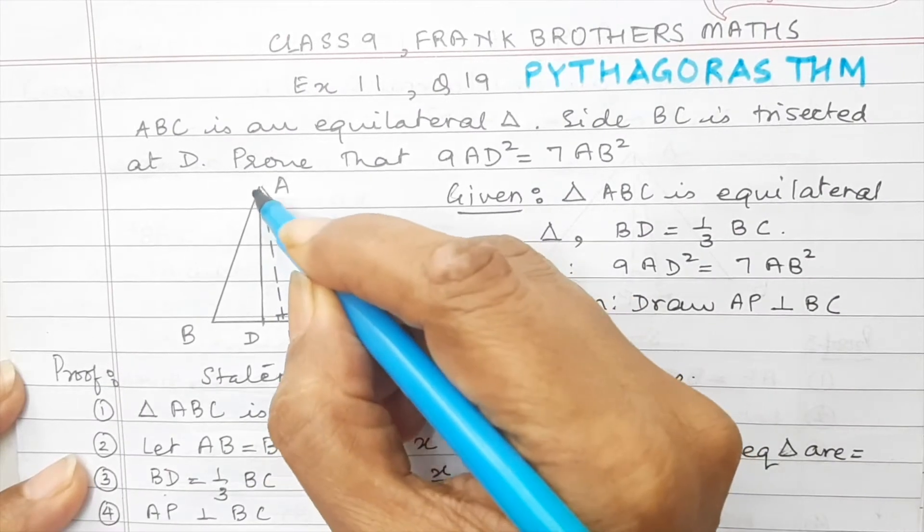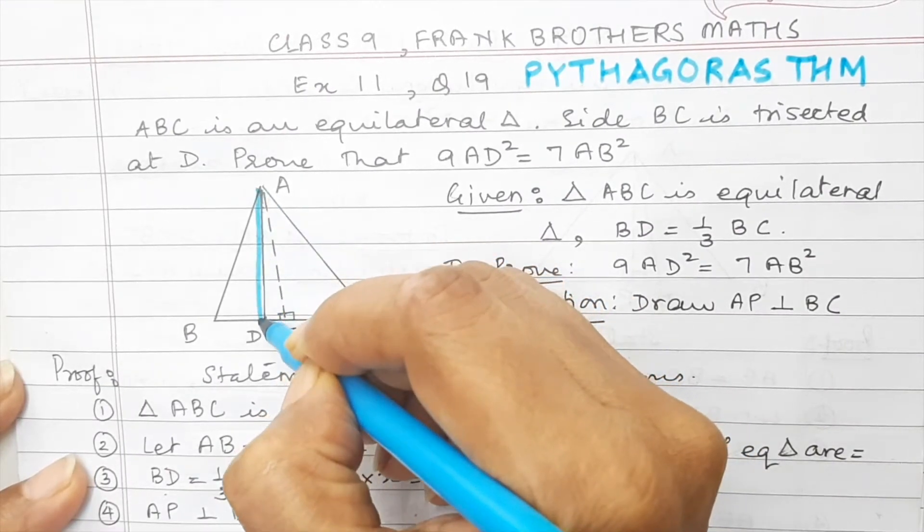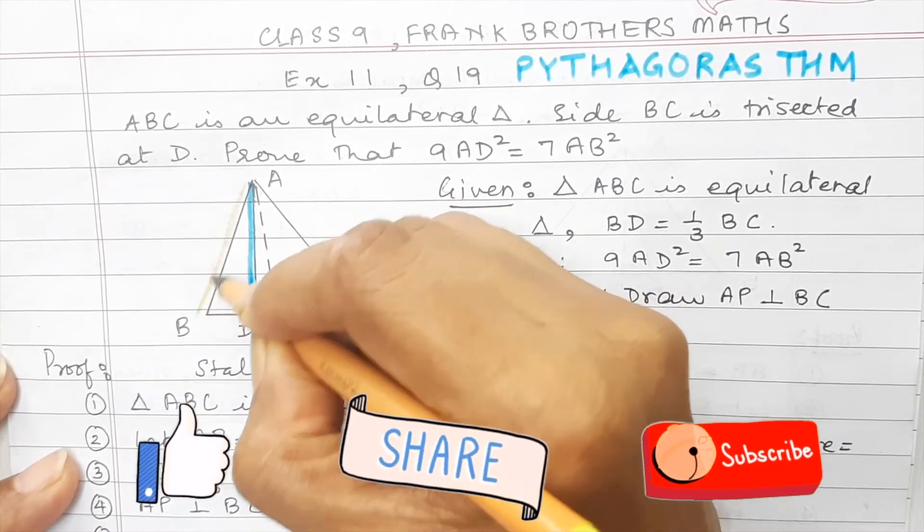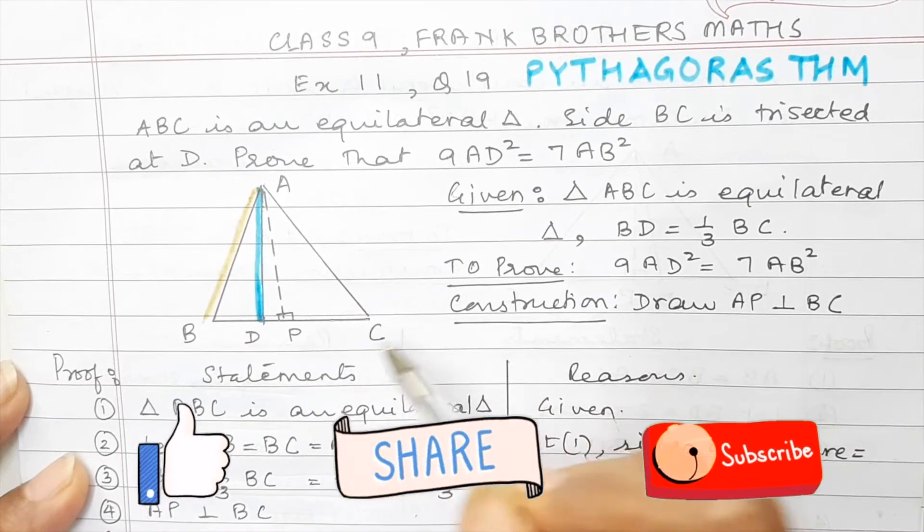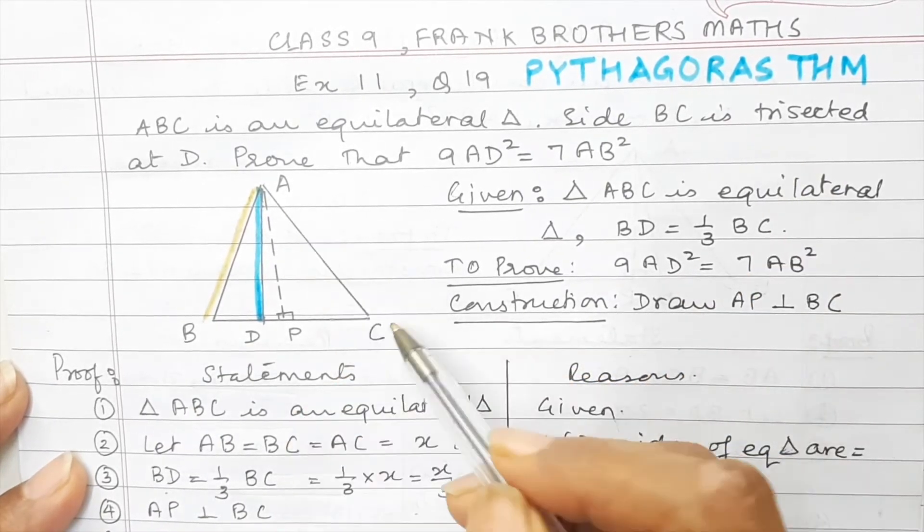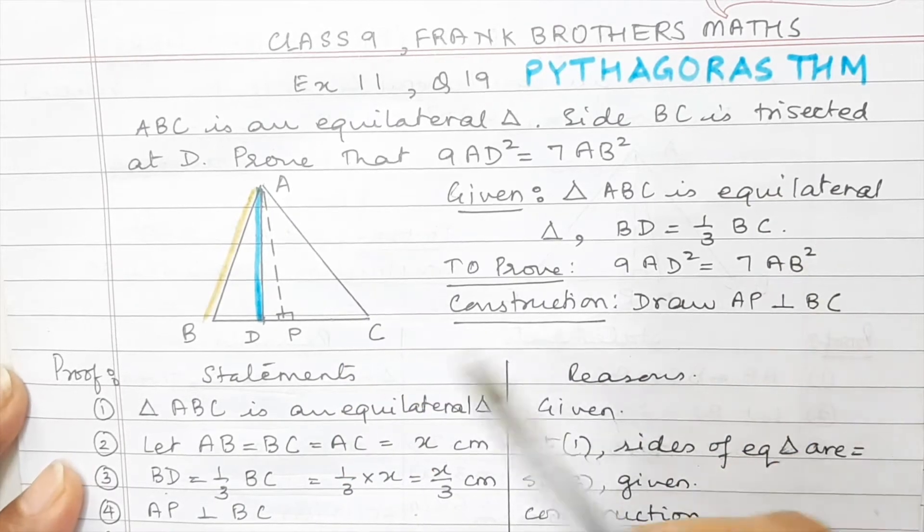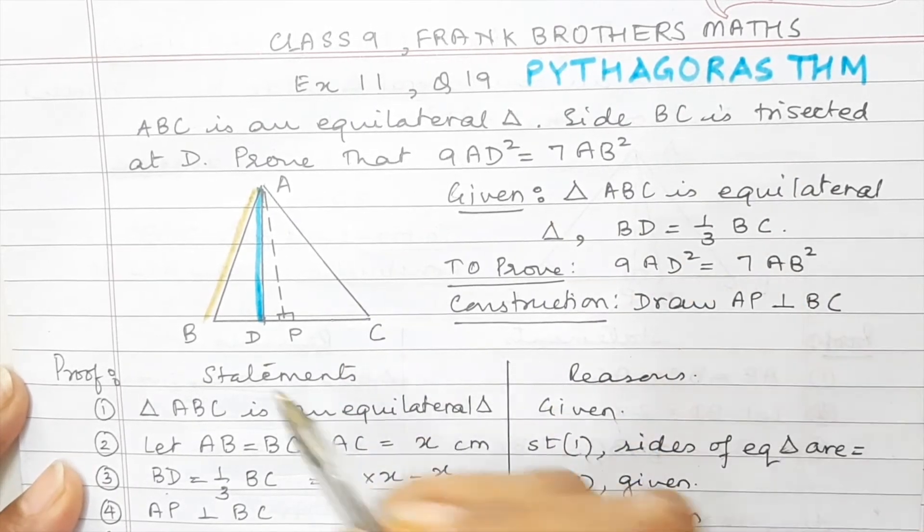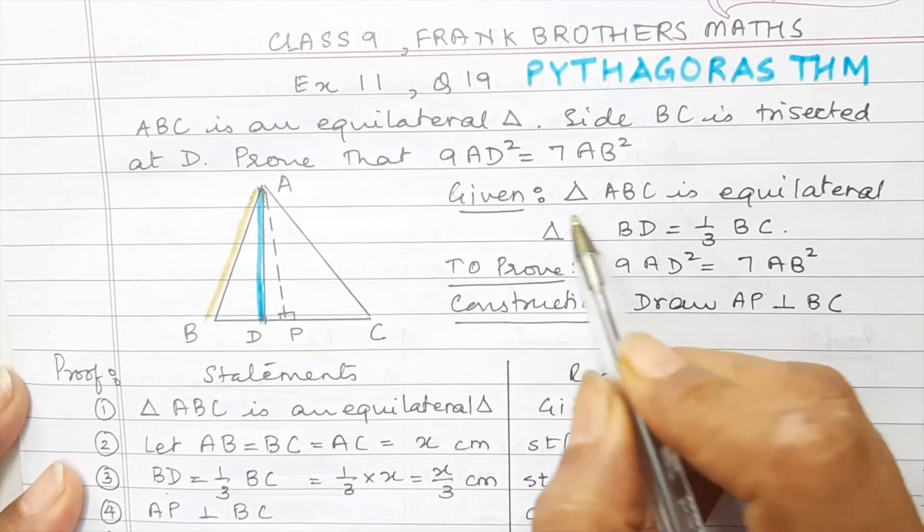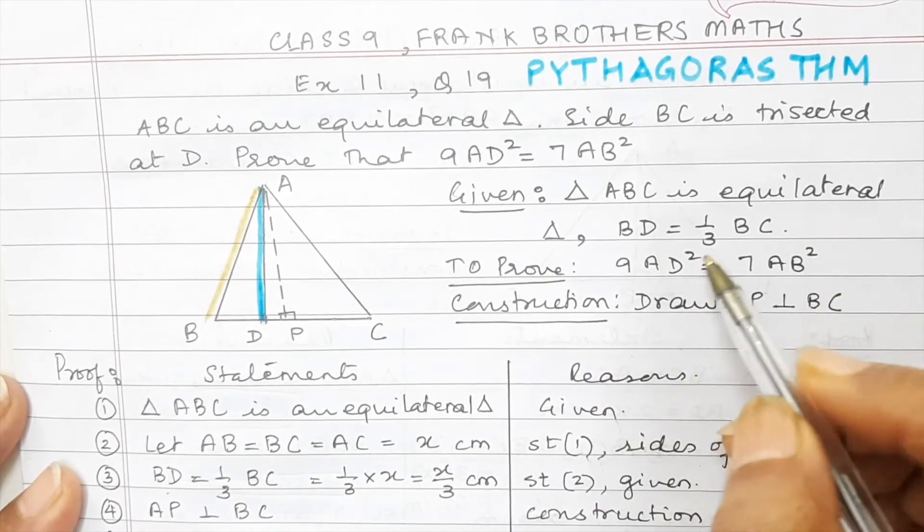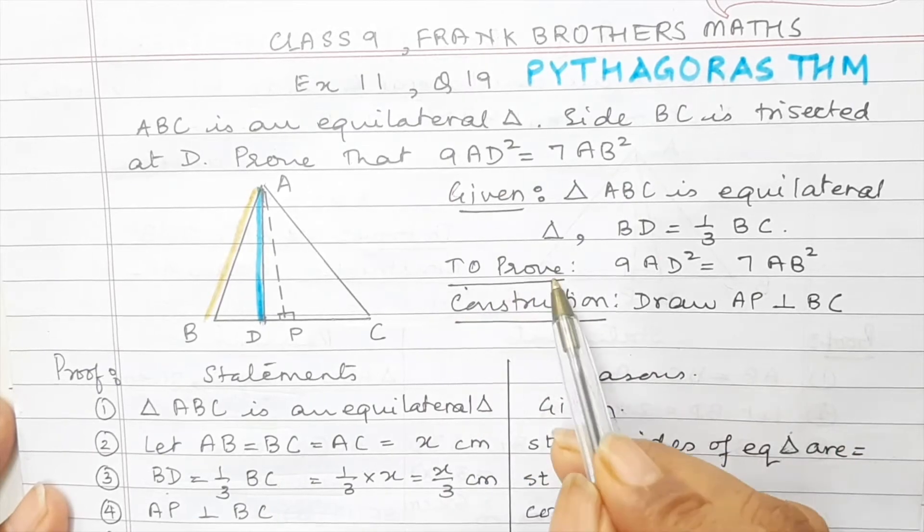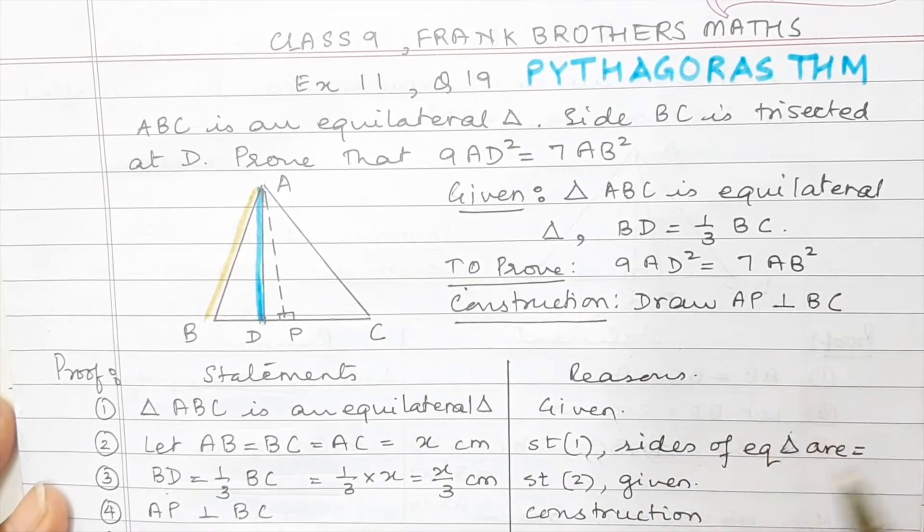So you have AD square that is here and that is to be connected with AB square. When you have to solve any question based on Pythagoras theorem, drawing the diagram is essential. So ABC is an equilateral triangle. I have drawn that and BC is trisected. So I have marked here D. So BD becomes one third of BC. So we have written that. Given triangle ABC is equilateral triangle. BD is one third of BC. And then we are asked to prove this. So we say to prove 9AD square is equal to 7AB square.